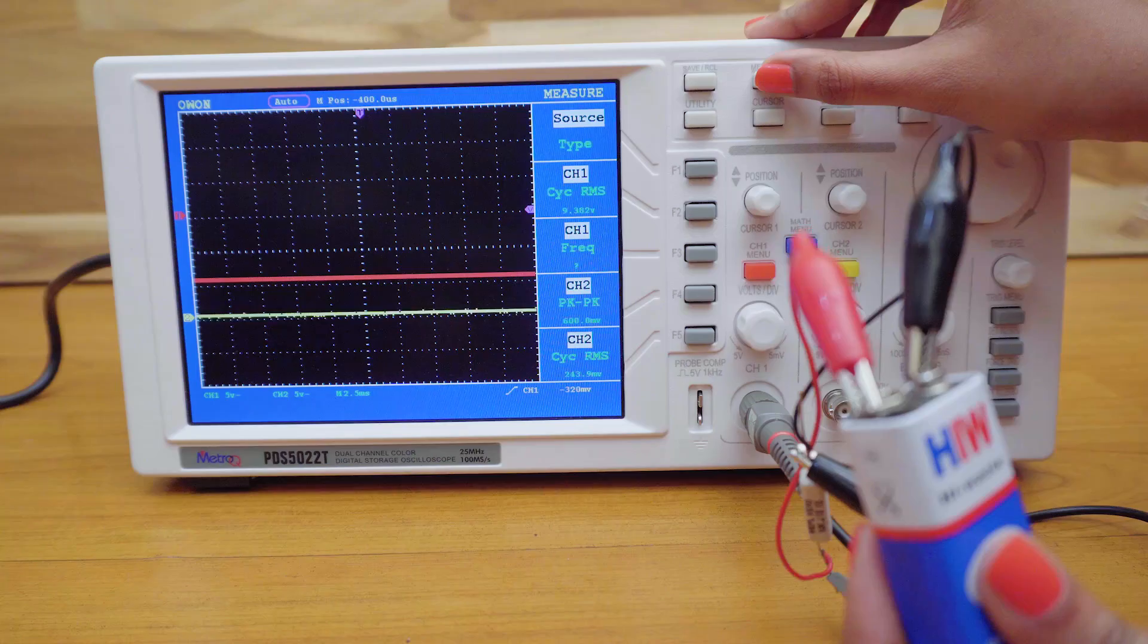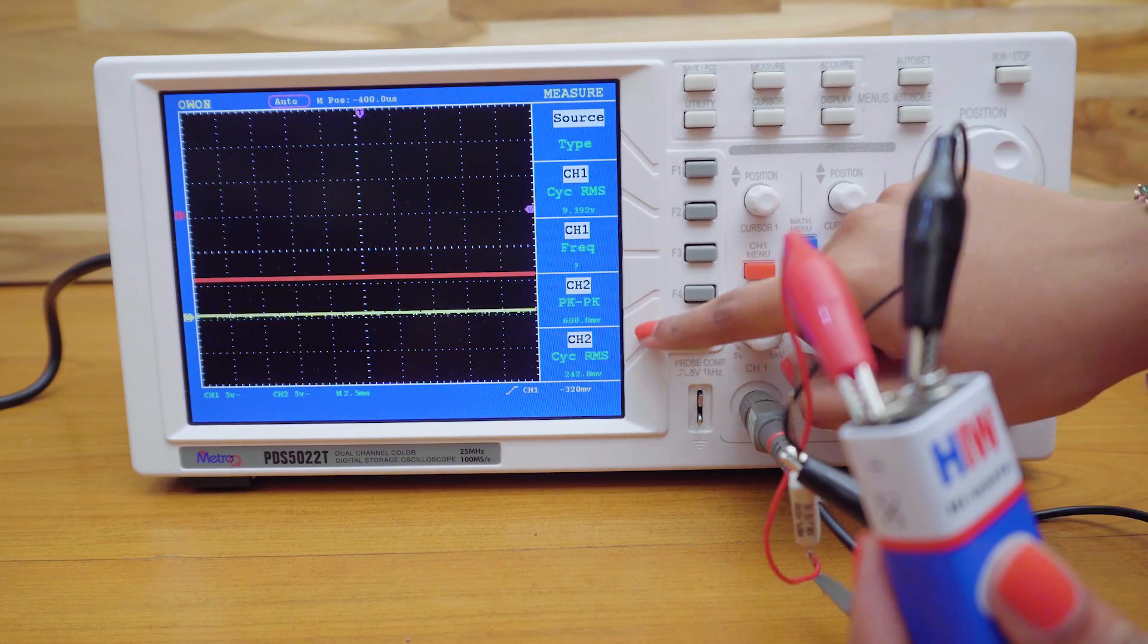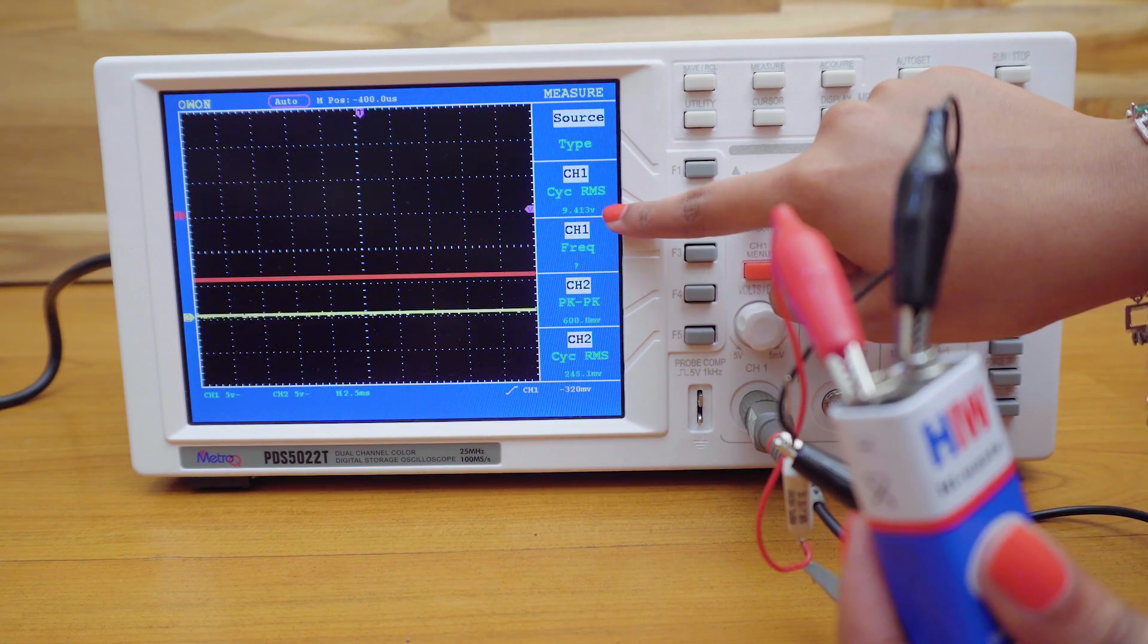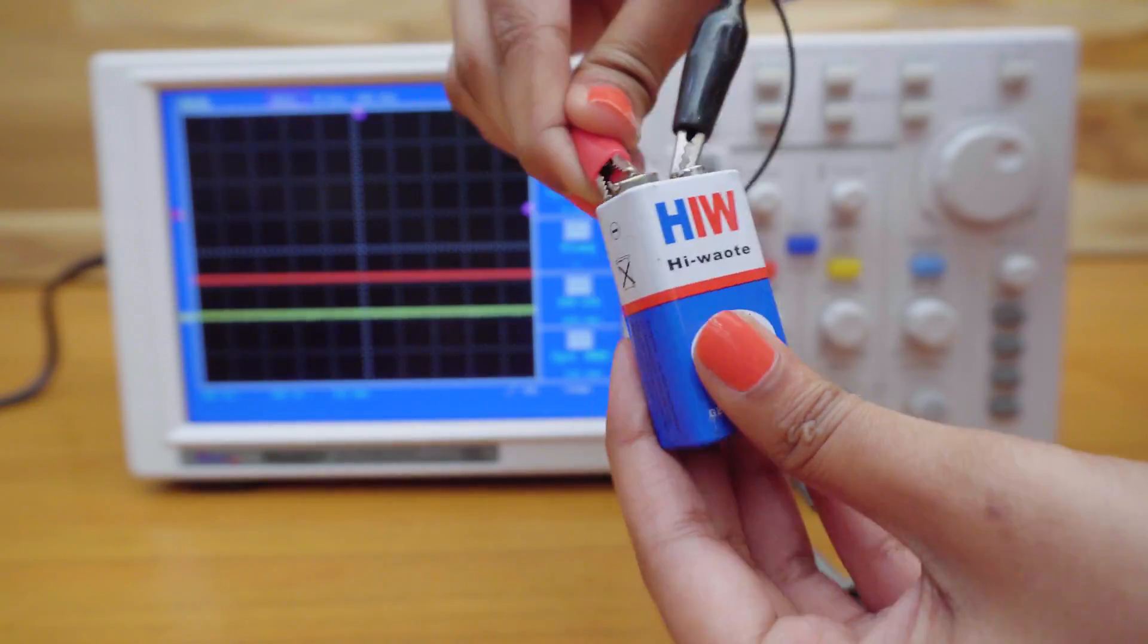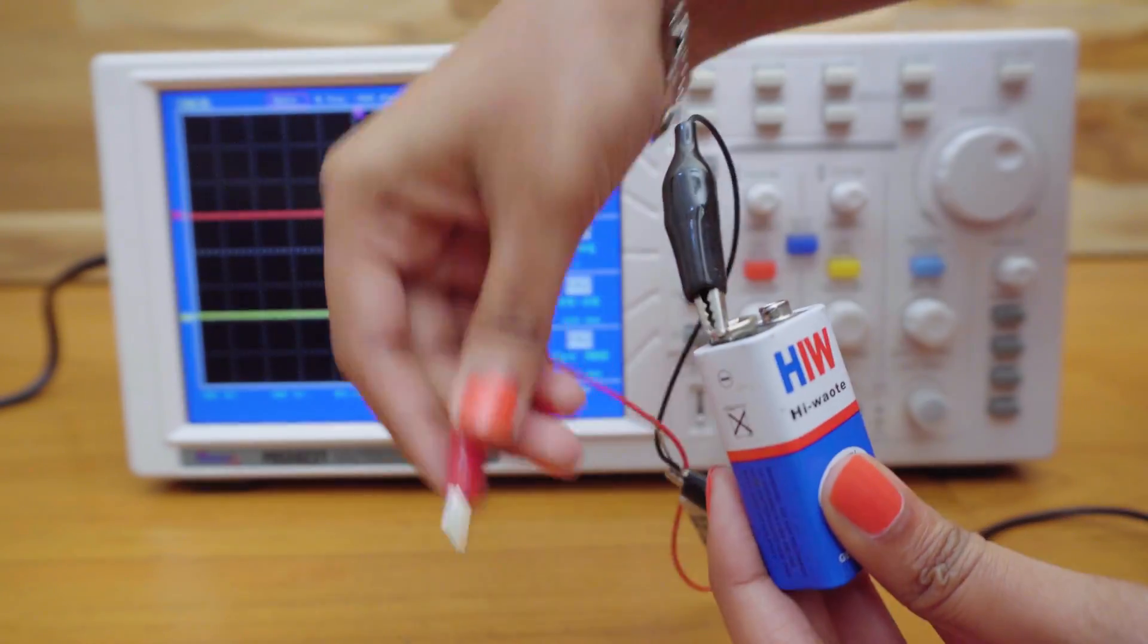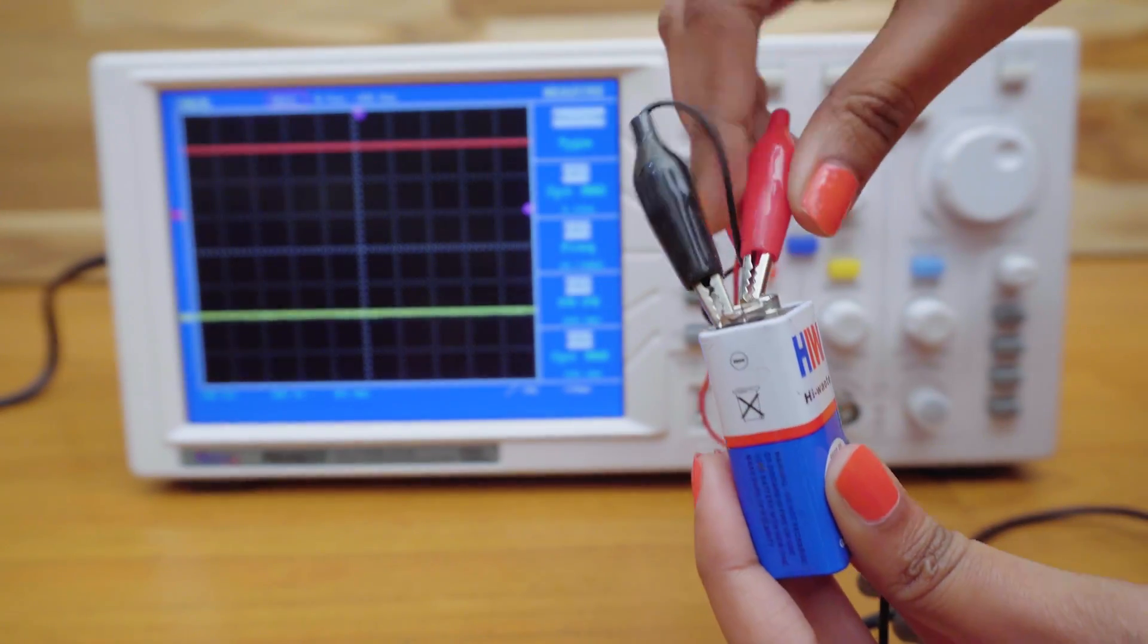Since it's DC voltage, which is a continuous signal, it will be displayed as a straight line. Here, the DSO is showing 9V. Let me just reverse the terminals. Now, you can see it in positive direction.